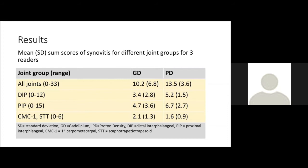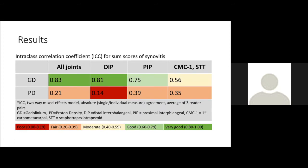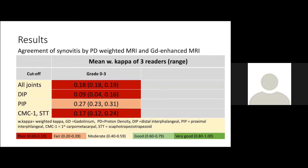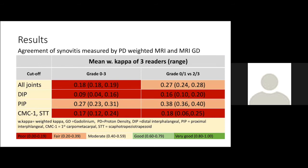Moving on to the results, we calculated mean subscores of synovitis for all joints together and for the different joint groups for three readers, demonstrating numerically more enhancement in the proton density images. Gadolinium-enhanced MRI demonstrated very good reliability for all joints together and in the DIP joints, while PIP joints showed good reliability and the thumb base moderate reliability. In the proton density sequence, the reliability was overall fair, while the DIP joints demonstrated poor reliability. When comparing gadolinium-enhanced MRI with proton density MRI, we found poor agreement for all joints together and for the DIP joints and thumb base. When increasing the cutoff and assessing both grade 0 and 1 as grade 0, we found slightly improved values; however, the agreement remained poor.